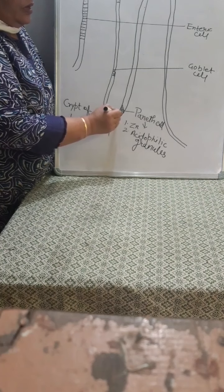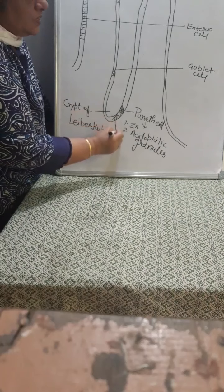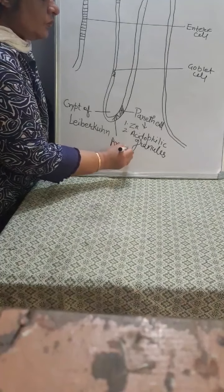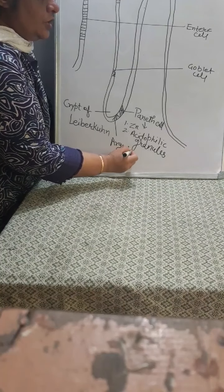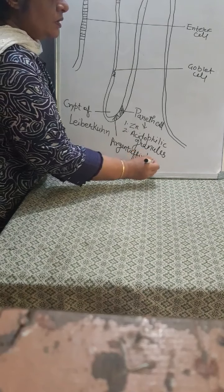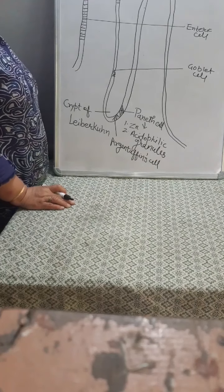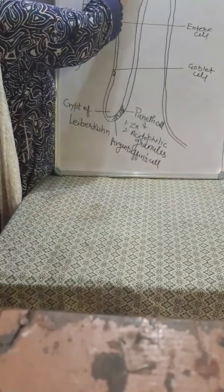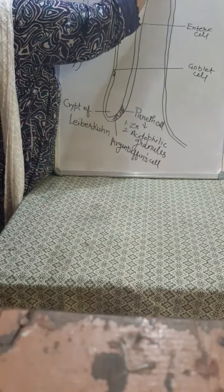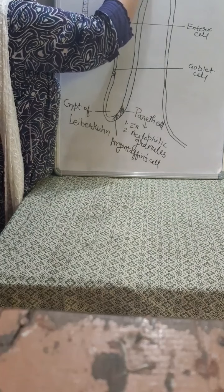Here at the base of this crypt of Lieberkühn there is another type of cell — these are called argentaffin cells, spelled A-R-G-E-N-T-A-F-I-N, also known as argentophilic cells. If we talk about the argentaffin cells, they release two things: first is secretin, which is a hormone, and second is 5HT.